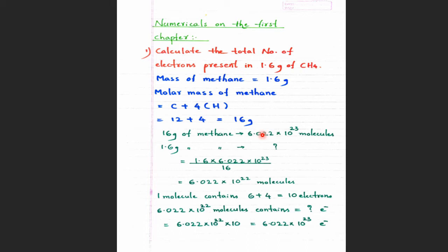Recall from Class 9: one mole of any substance contains 6.022×10²³ particles of that substance, when you take the respective gram atomic mass or gram molecular mass. So 16 grams of methane contains 6.022×10²³ molecules. In our given sample of 1.6 grams, applying the proportional method gives 6.022×10²² molecules of methane.